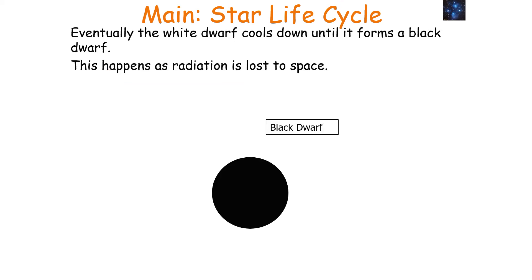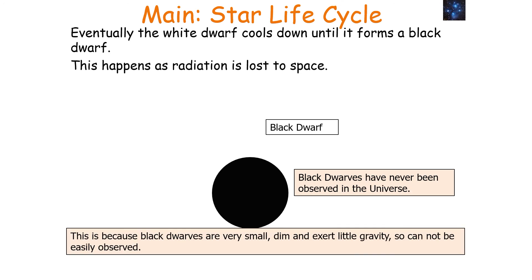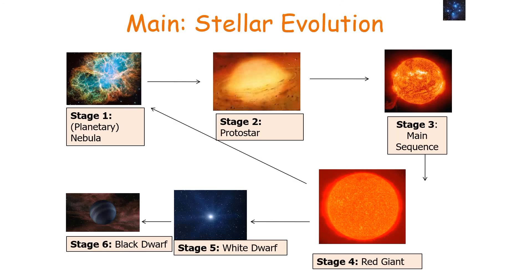Eventually the white dwarf cools down until it forms a black dwarf, as radiation is lost to space. Black dwarfs have never been observed in the universe, so they are purely theoretical objects. They would be in thermal equilibrium with space so would be very cold. Black dwarfs cannot be easily observed as they are very small, dim, and exert little gravity. Additionally, we believe the universe has not existed for long enough for a white dwarf to cool into a black dwarf. So the full stages of stellar evolution are: nebula, protostar, main sequence, red giant, white dwarf, and black dwarf.